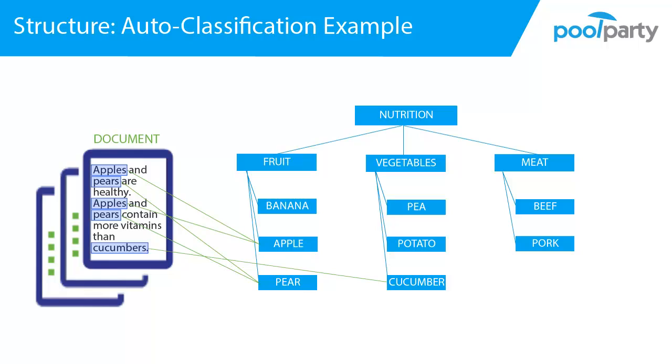In the next step the PoolParty Extractor will look at the structure of the thesaurus. The top concepts in your thesaurus will be the classes or categories that the PoolParty Extractor will use to classify your document. The PoolParty Extractor will look at all narrower concepts of each top concept and count how many of them it finds and how frequently they occur in the text. That top concept whose narrower concepts appear the most will be determined to be the class of the document.